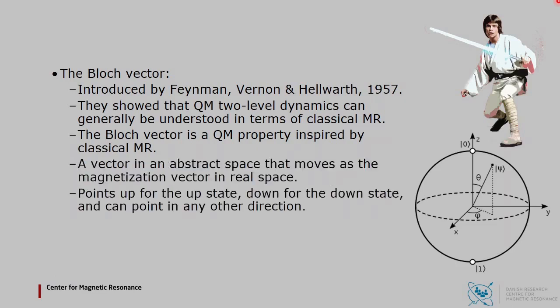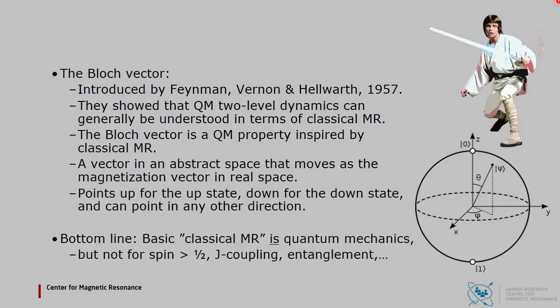The Bloch vector is an abstract quantum property inspired by MR, and in this case it is simply the nuclear magnetization behaving as expected classically. It points up for the up state, down for the down state, and can point in any other direction.